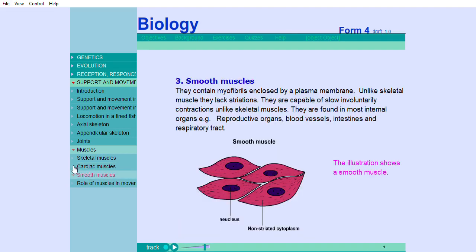Smooth muscles are found in most internal organs, for example, reproductive organs, blood vessels, intestines, and respiratory tract. The illustration shows a smooth muscle.